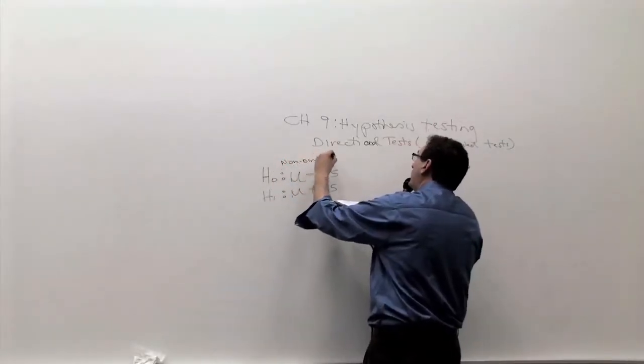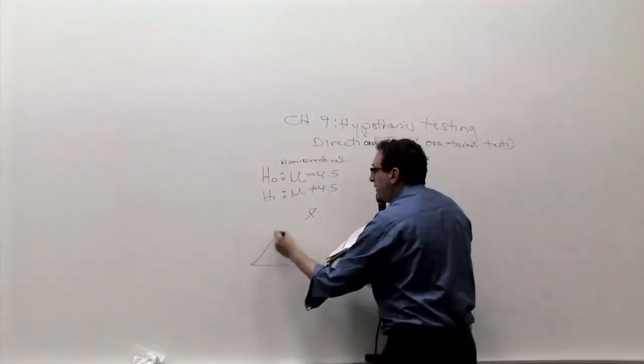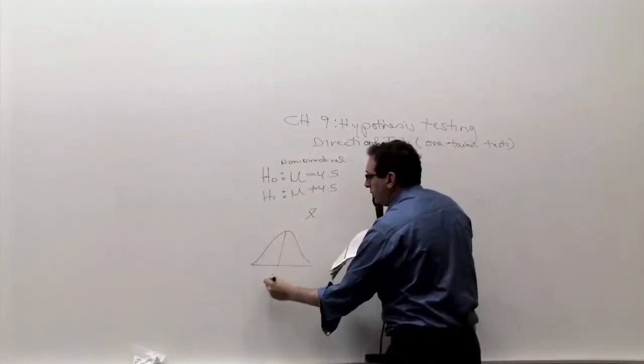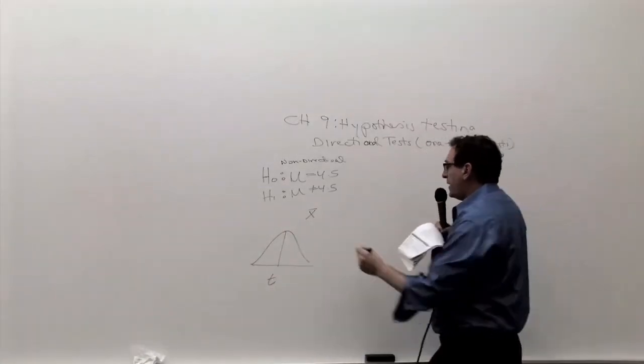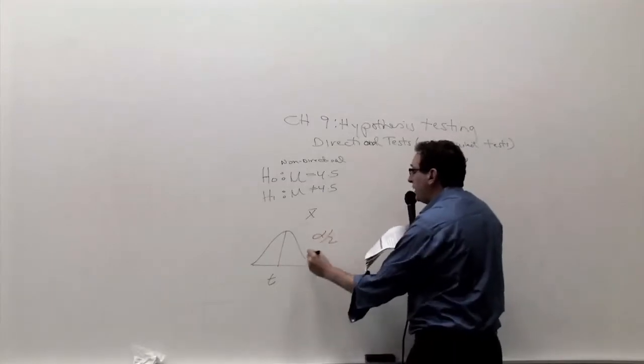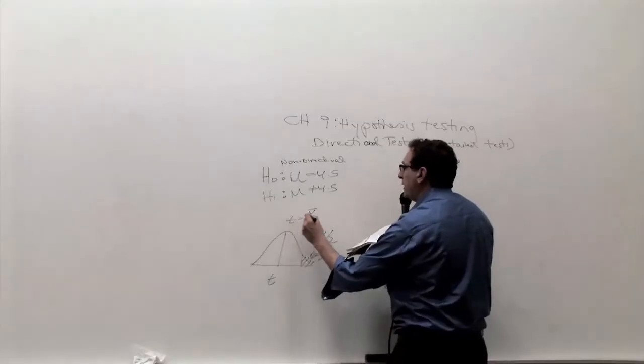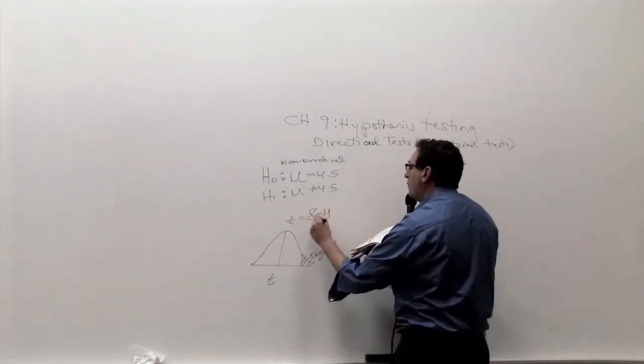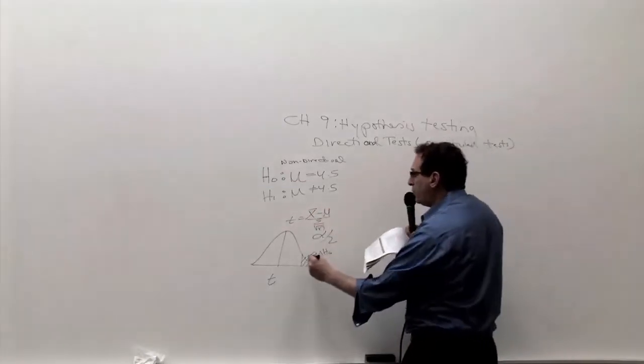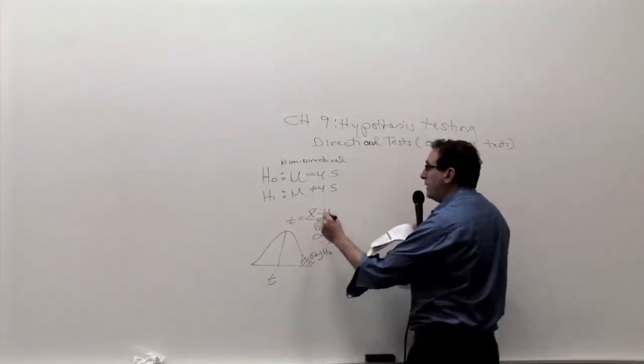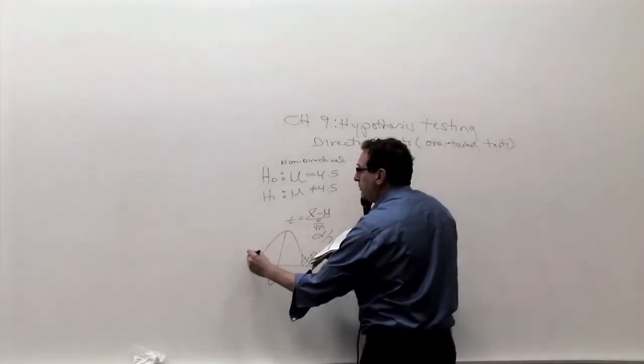And because it's a non-directional test, when it comes time to do either the z calculation or the t calculation, depending upon if you have the standard deviation of the sample, you're going to take the alpha and distribute it equally among the two sides. Either you're going to end up with a very positive z-score. Again, the formula for this is x-bar minus mu over s over root n. If the x-bar is much bigger than mu, you're going to get a very positive t-score, you're going to reject H0. If the x-bar is much lower than 4.5, that will be a very negative z-score. That will also reject H0.